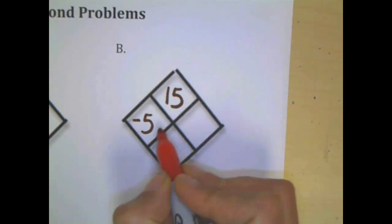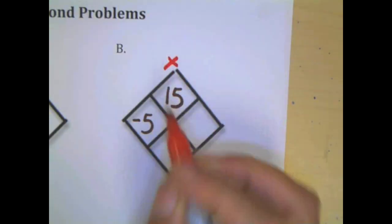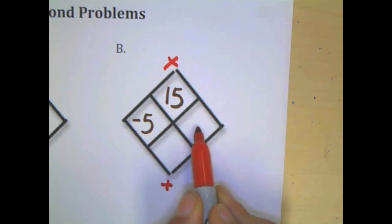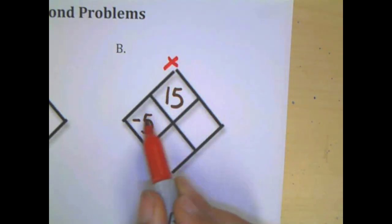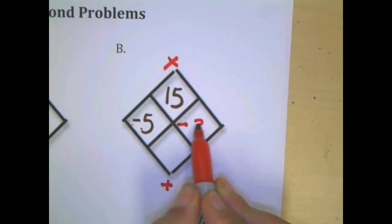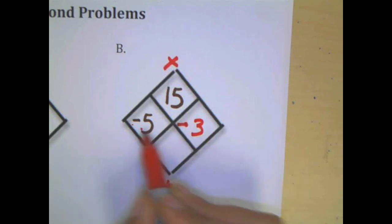The next problem: once again, this is the product on top and the sum on the bottom. Negative 5 times what gives us positive 15? Deal with the sign first. Negative times a negative gives us a positive, 5 times 3 gives us 15. Finding the sum of negative 5 plus negative 3 is negative 8.